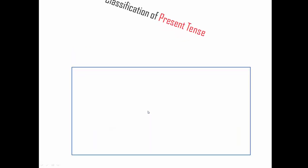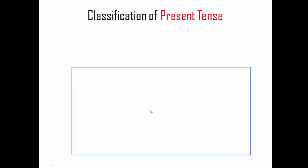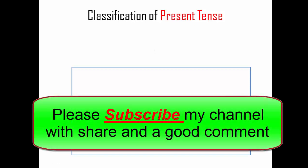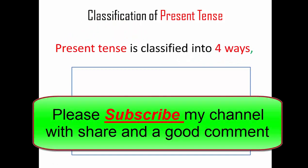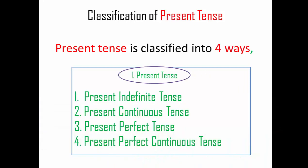Dear viewers, present tense is also classified in many ways. We can classify present tense in four ways: present indefinite tense, present continuous tense, present perfect tense, and present perfect continuous tense. Let us learn in detail one by one.